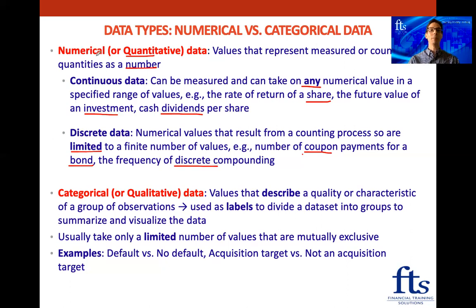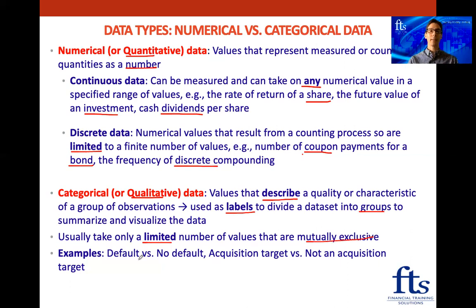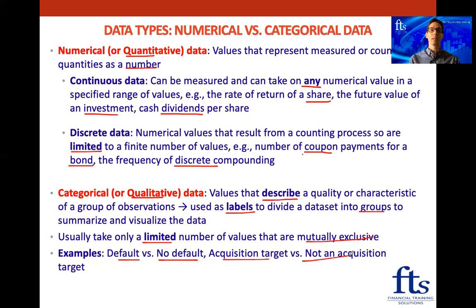Now we need to compare numerical data to categorical data. Categorical data, also called qualitative data, consists of values that describe a quality or characteristic of a group of observations. They are used as labels to divide a data set into groups to summarize and visualize the data. They usually take only a limited number of values that are mutually exclusive — meaning it is one or the other. For example, companies either default or they don't, a company could be an acquisition target or not, or a company makes a dividend payment or it does not.